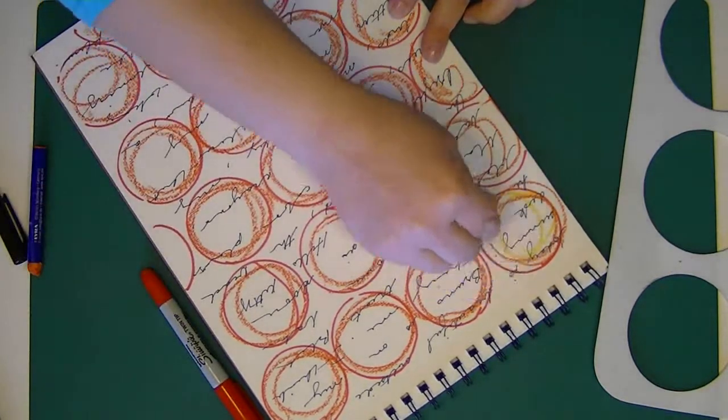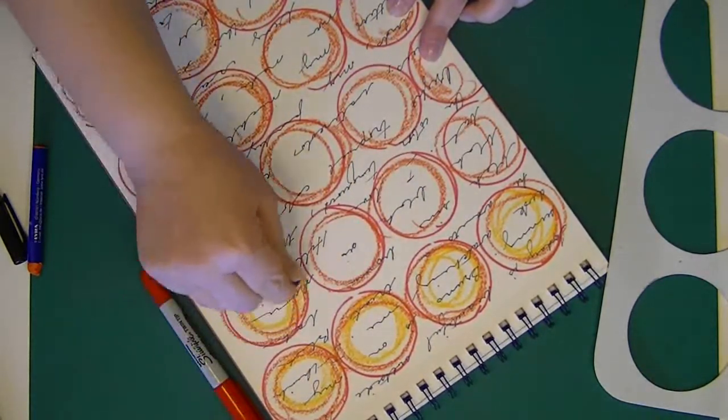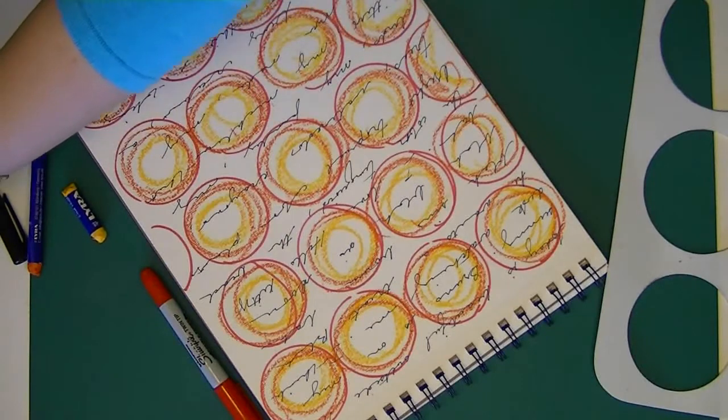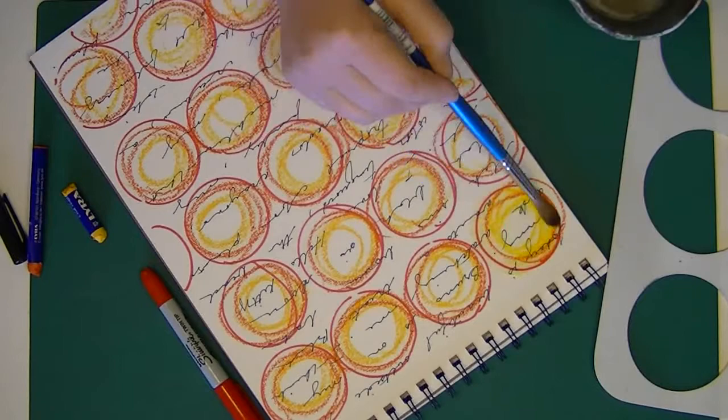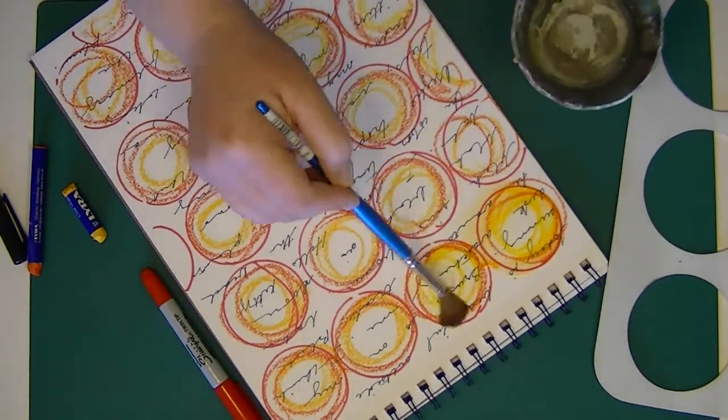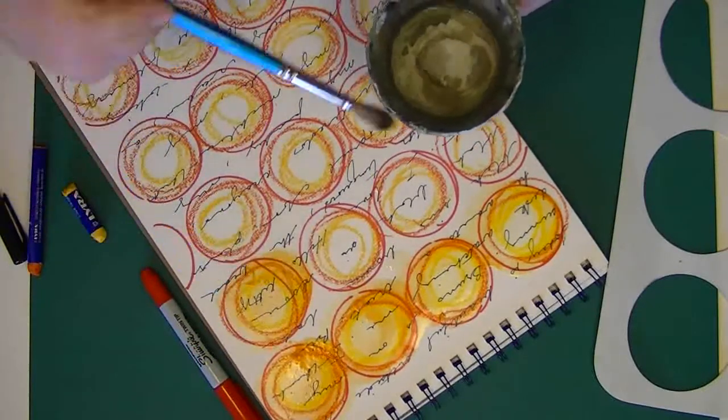I'm going to take my other crayon. Again, I'm just scribbling. Once I've got all of my things scribbled, then I'm just going to dip my watercolor brush in water and start blending that watercolor crayon.